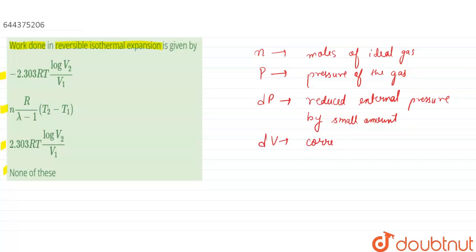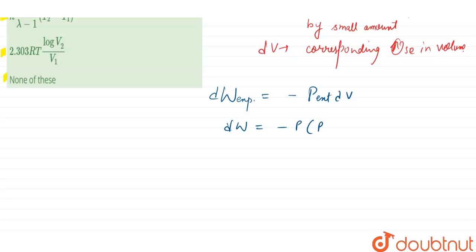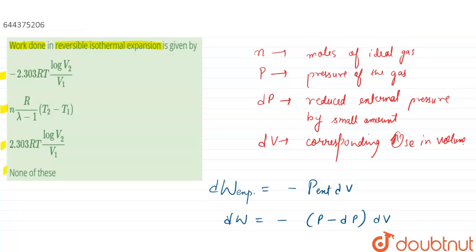The corresponding increase in volume will be dV. Therefore, the small work done in the expansion process is given by: dW = -P_external × dV. So work done equals minus (P minus dp) multiplied by dV, because the pressure of the gas equals the external pressure, and the reduced external pressure is P minus dp.